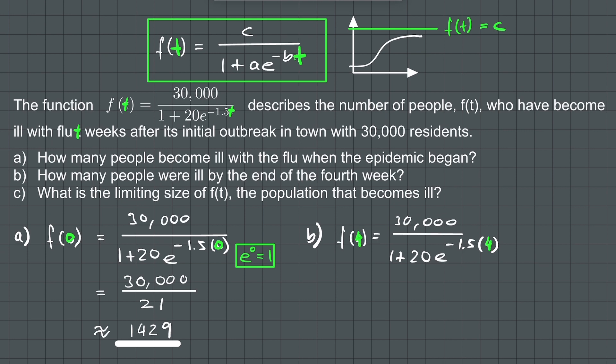By using a calculator, we get approximately 28,583. So approximately 28,583 people were ill by the end of the 4th week.